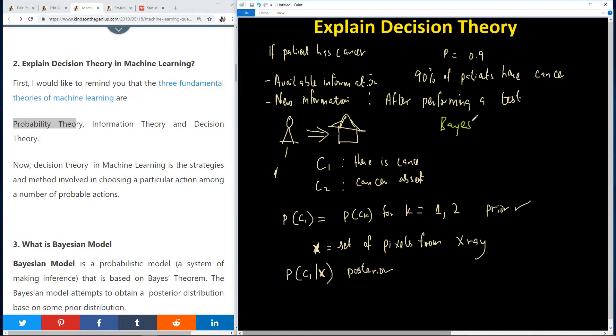And it is giving us P of CK given X is equal to P of X given CK times P of CK divided by P of X.